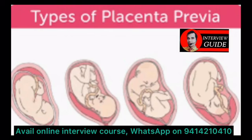On the basis of umbilical cord insertion in the placenta, it can be of different types: central, lateral, marginal, or velamentous placenta.